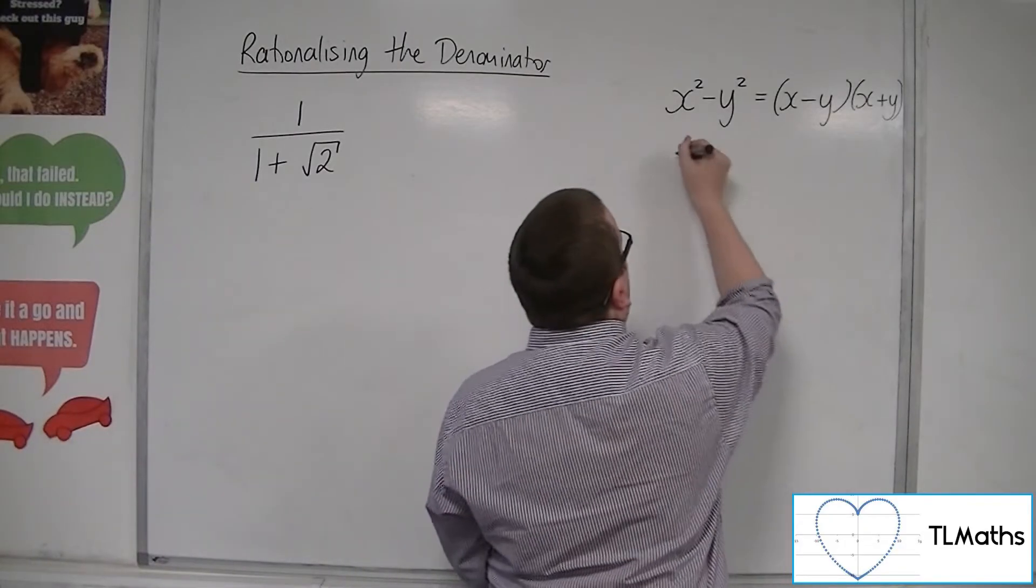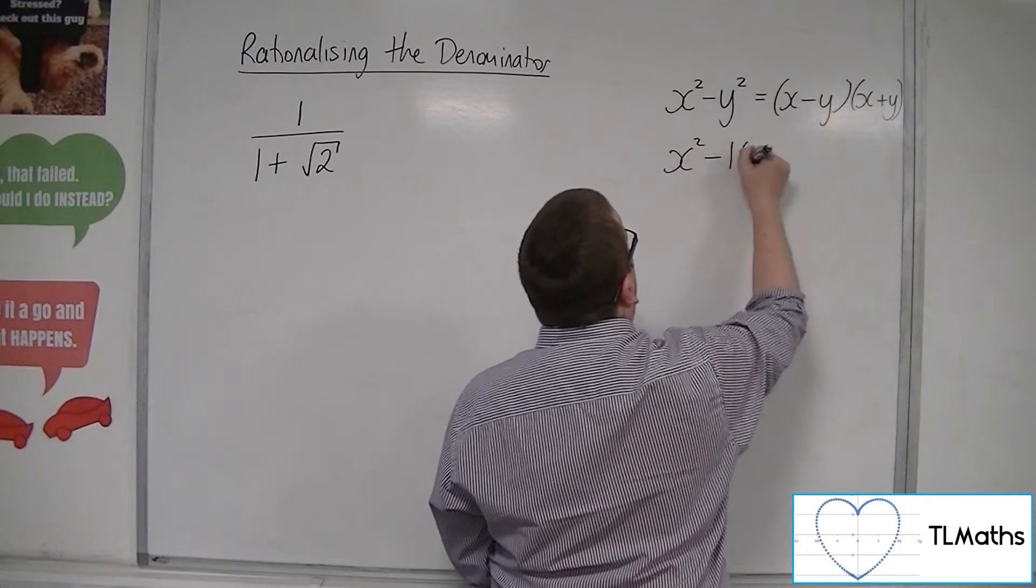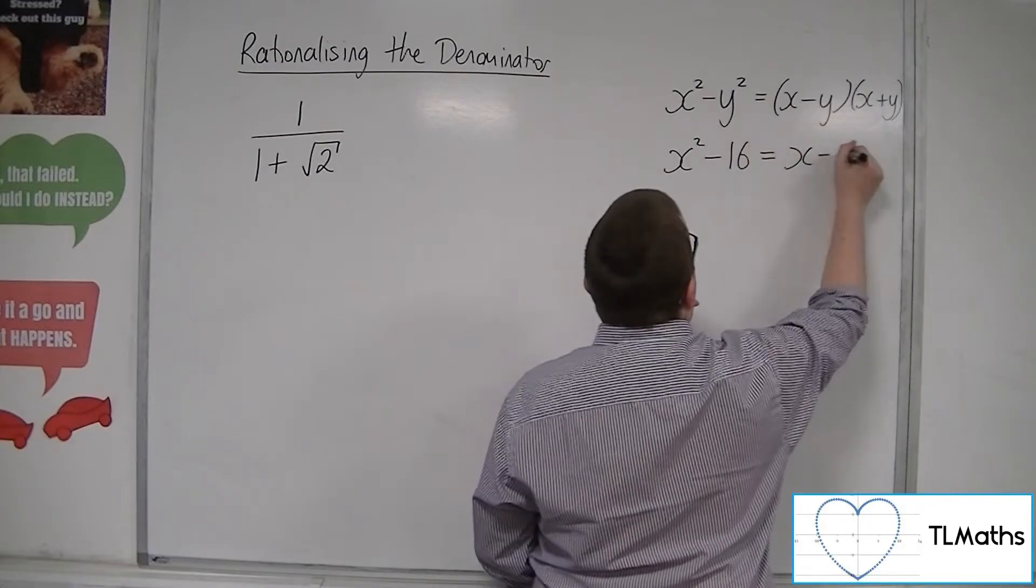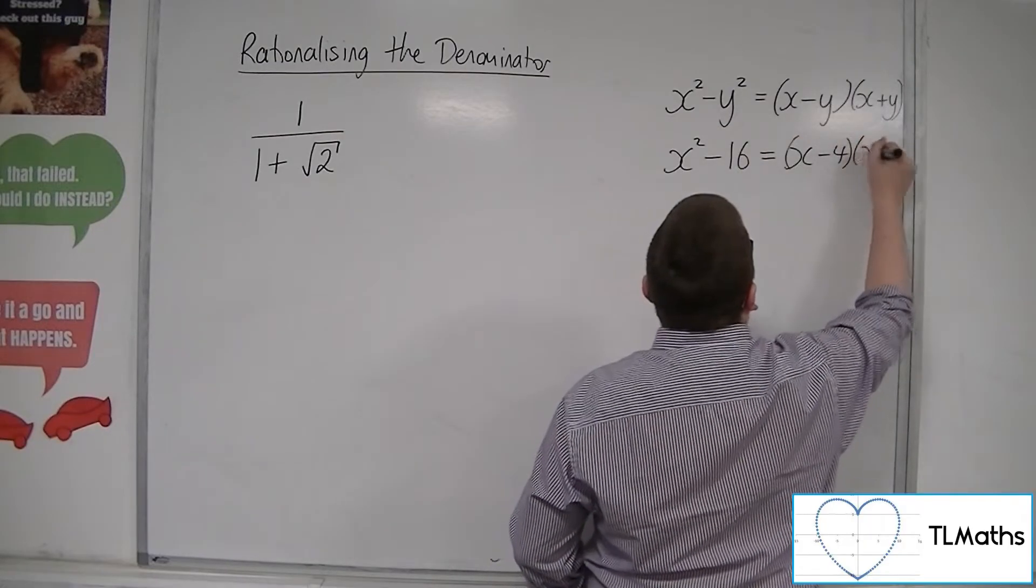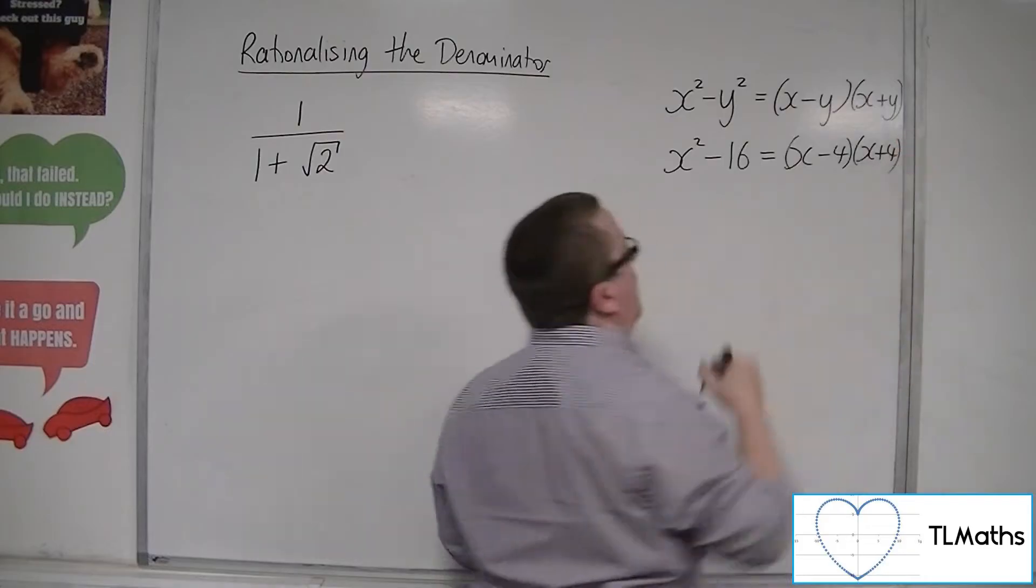That's why when we look at things like x squared minus 16, when I factorize that, I get x minus 4, x plus 4. And more on that later.